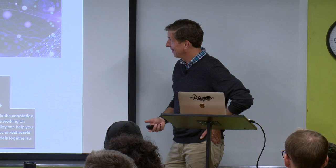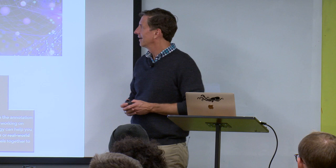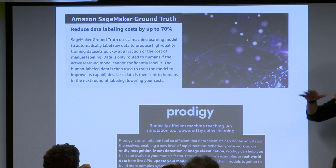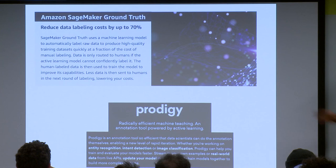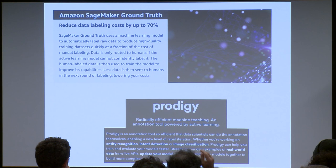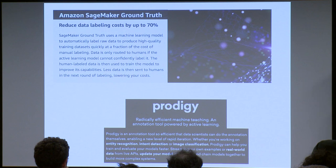Recently, Amazon SageMaker Ground Truth and Prodigy are services aimed at reducing the cost of labeling using active learning techniques. SageMaker is directly connected to Amazon Mechanical Turk. Prodigy has focused a lot on natural language problems but also covers image classification. Both are using active learning to train machines using fewer labeled examples from humans.